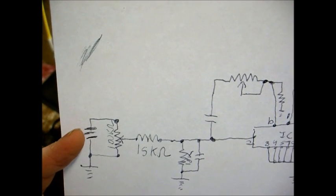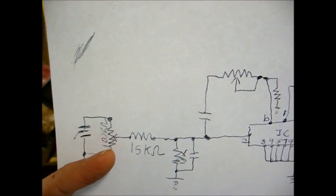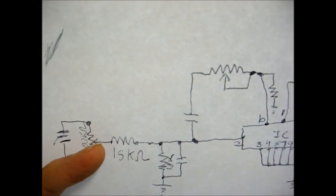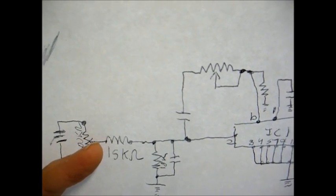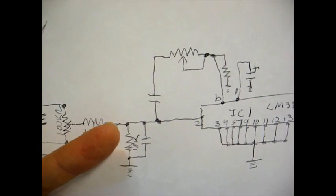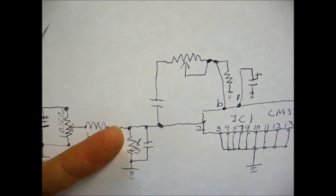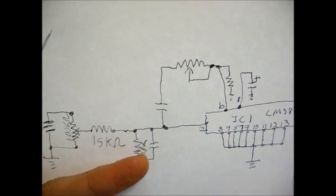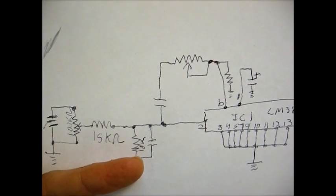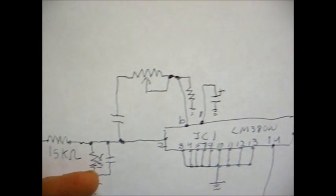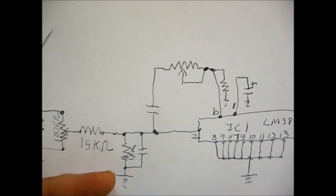Here's our cartridge. It feeds into the volume control. Output of the volume control, which is the wiper there, goes through a 15K ohm resistor, which goes to this 18K ohm resistor that's in parallel with this disk capacitor that goes to ground. And then we move on into the signal input of the IC.